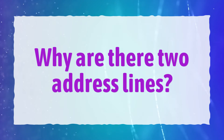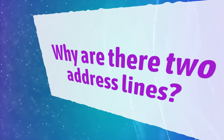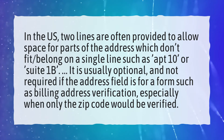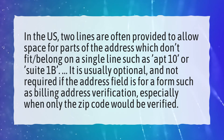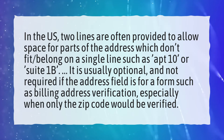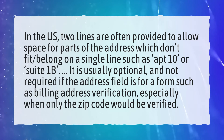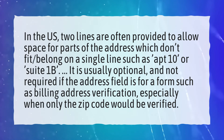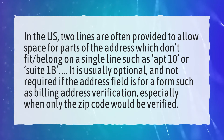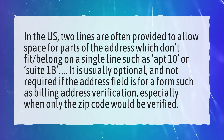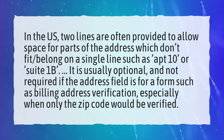Why are there two address lines? In the U.S., two lines are often provided to allow space for parts of the address which don't fit on a single line, such as apt-10 or suite-1b. It is usually optional, and not required if the address field is for a form such as billing address verification, especially when only the zip code would be verified.